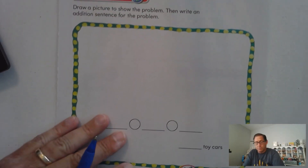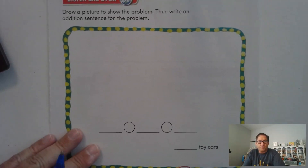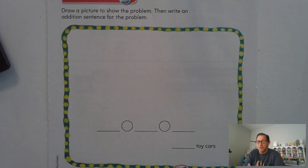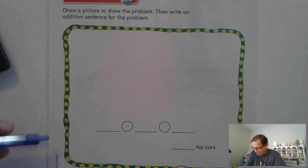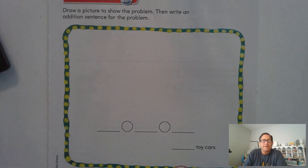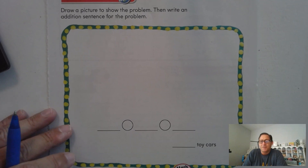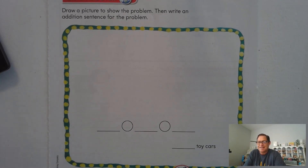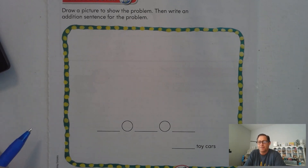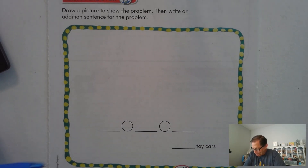Let's review what we mean by double facts. When I ask you to draw a picture to represent this, just keep it simple — like circles, X's, squares, dots even.